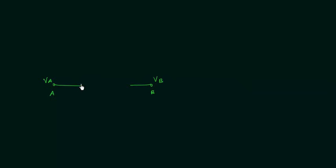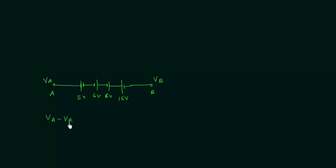And here we have a potential difference of 5 volts with this polarity, then a potential difference of 6 volts, after this a potential difference of 8 volts, and the final potential difference is equal to 15 volts. So these are the 4 potential differences given in this circuit, and we need to calculate Va minus Vb, which is the potential difference between point A and point B.